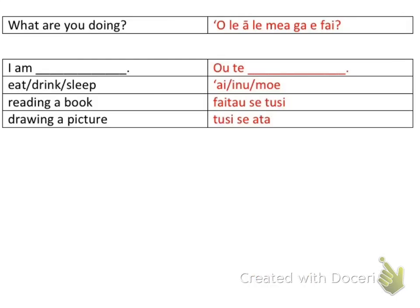This last phrase is something I decided to add because you get this question a lot. When I first arrived, my zone leader who had been out 18 months still didn't say it correctly. The correct way to say 'what are you doing' is 'O le a le mea na e fai.' Responses include: 'I am eating' — 'ai'; 'I am drinking' — 'inu'; or 'sleeping' — 'moe.'